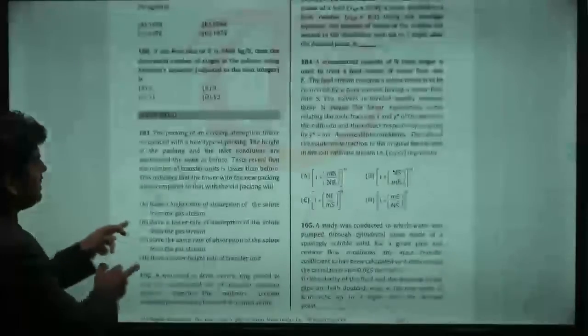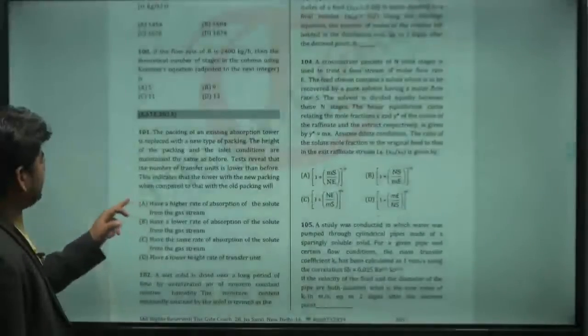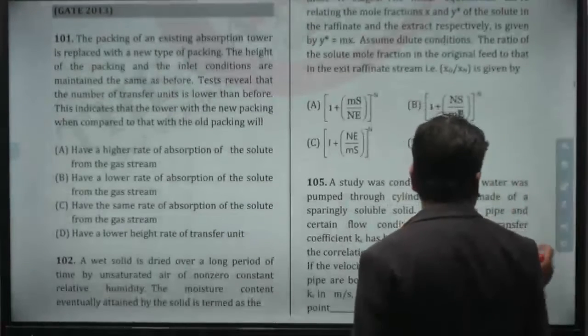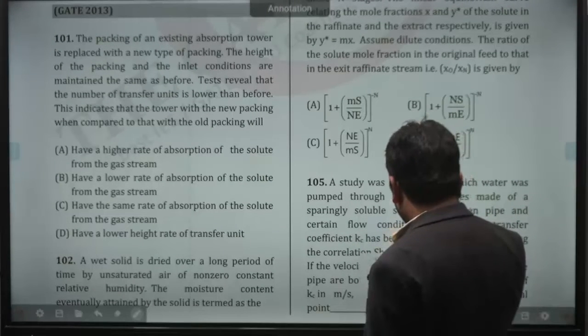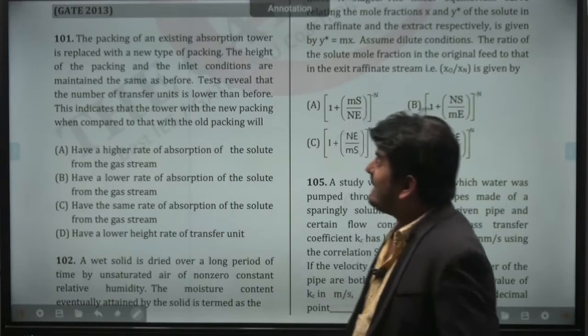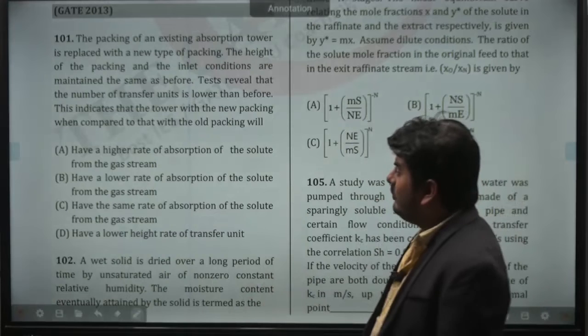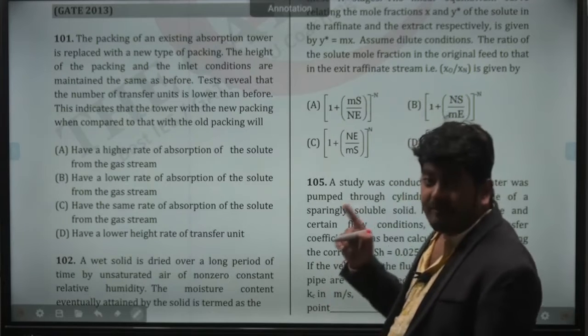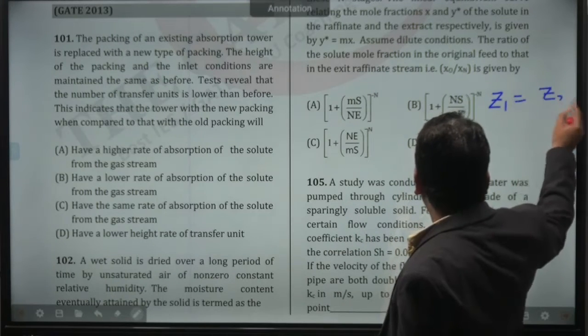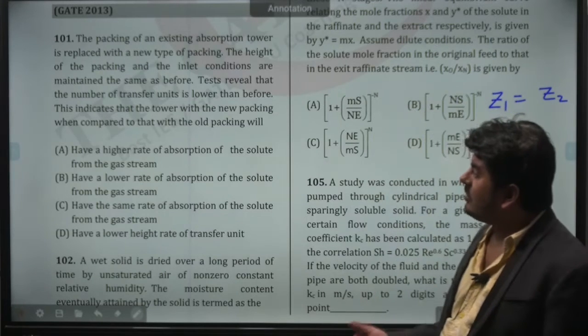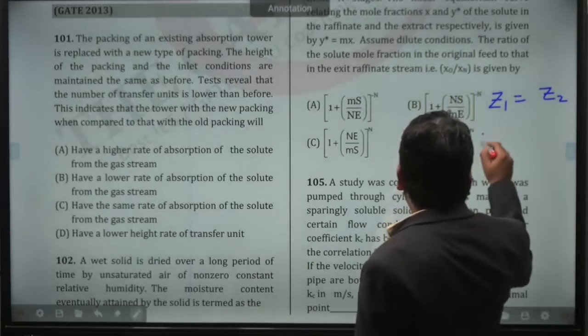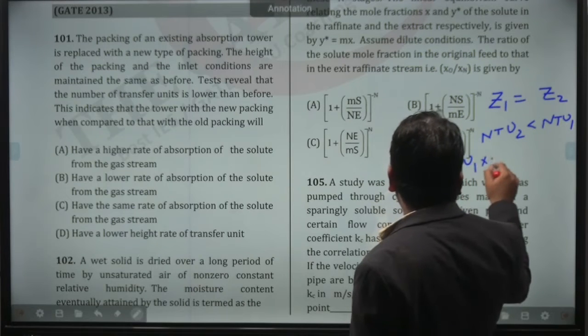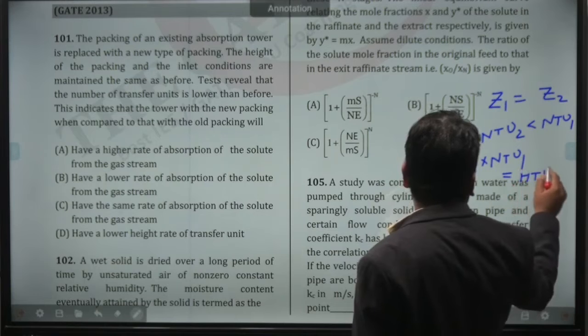Like this question, 2013, question number 101. The packing of an existing absorption tower is replaced with a new type of packing. The height of packing and the inlet conditions are maintained same as before. Height of packing means Z is same. The test reveals that the number of transfer unit is lower than before. Means NTU2 is less than NTU1. And you know that Z is what? HTU1 into NTU1, Z2 is HTU2 into NTU2.